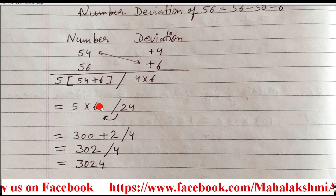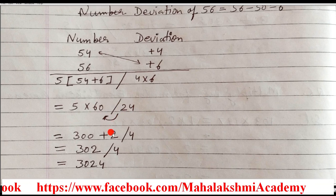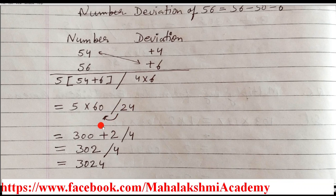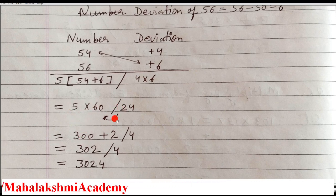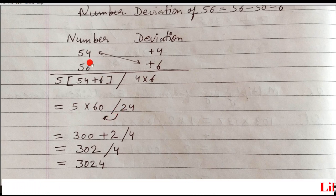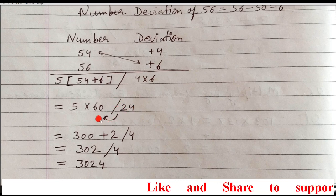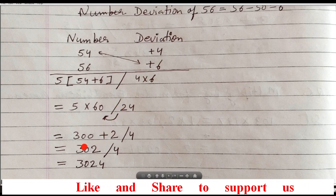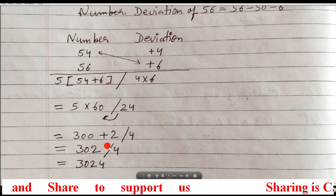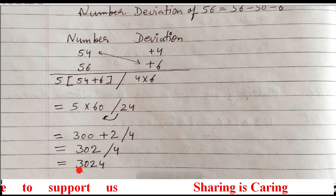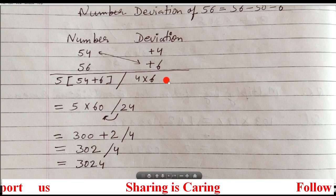This 2 you have to shift. When we do the shifting of this 2, it becomes: 5 into 60 is 300, and we shift the 2. So it becomes 302 and 4 as it is. Now remove the slash, and you get the answer 3024.